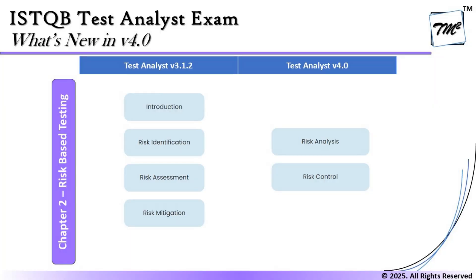Quickly comparing the next chapter — chapter two is going to talk about risk-based testing. We had three major phases in scope in 3.1, which pretty much remains the same here as well. It's just that risk analysis and risk control now become two major topics, where analysis includes identification and assessment, and control includes mitigation and monitoring — and the content pretty much remains the same. This still remains the smallest chapter of the syllabus, just three to four pages, but with a lot of information since fundamental things were already covered in foundation. Here we will not repeat that; rather, we'll talk more about what is the task of the test analyst when it comes to risk-based testing.